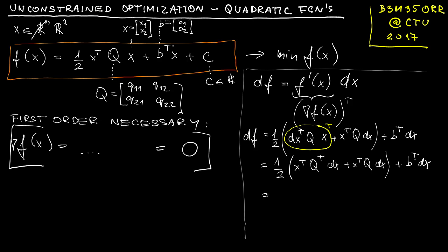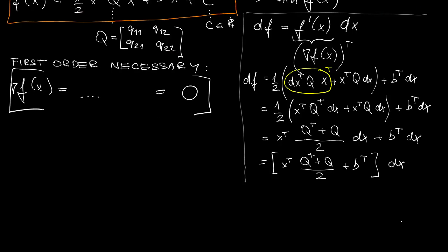So why not transpose them? You can now guess where we are heading. We would like to express the differential as something times dx. The content of the brackets is the derivative - a row vector - and its direct transposition gives us the gradient.